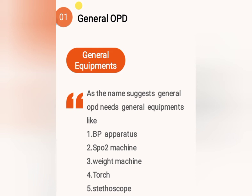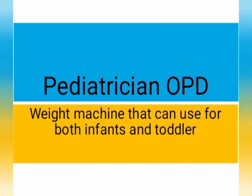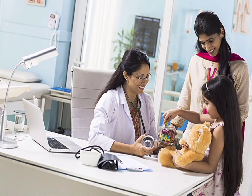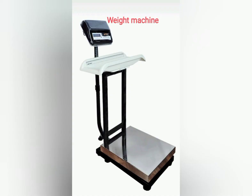Next, OPD number 2 is Pediatric OPD. This OPD is specialized for infants and children's health complaints. From those general equipments, the Weight Machine should be a very precise one and should be of 2-in-1 type — that is, for both infants and kids — as shown in the picture.